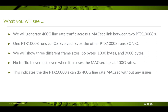We will generate 400G Line Rate traffic across the MaxSec link between two PTX 1008s. One of the PTXs runs JunOS Evolved, Juniper's modern cloud operating system. The other PTX 1008 runs Sonic, an open source NOS driven by the OpenCompute project. We will show three different frame sizes: 66 bytes, 1000 bytes, and 9000 bytes. For all frame sizes, there will be no traffic loss, showing that the PTX 1008 can indeed do Line Rate MaxSec.